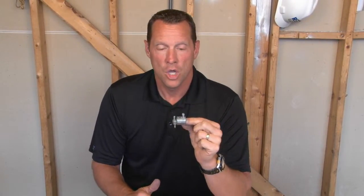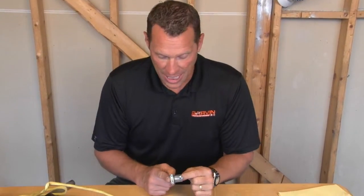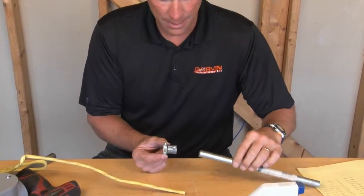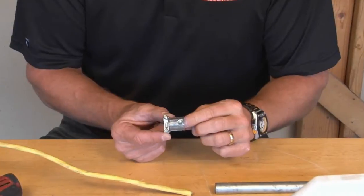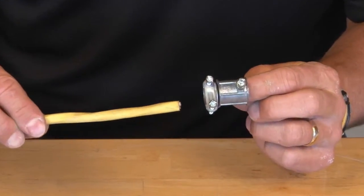Garvin Industries EMT-NM38 creates a connection point between EMT conduit that's half inch as well as standard NM sheath cable.